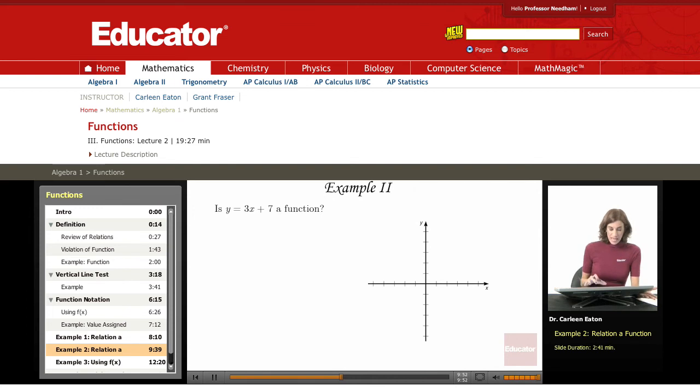But in order to do that, I need to be able to graph this function. So what I'm going to do is assign some values for x, determine what y is, and generate some ordered pairs.